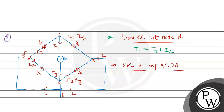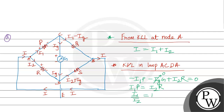Applying KVL along loop ABDA: with plus-minus signs assigned, we get minus I1 times P, plus I_G times G, plus I2 times R equals zero. In balanced condition, the galvanometer current I_G is zero. Therefore, I1 times P equals I2 times R, giving us I1 by I2 equals R by P.